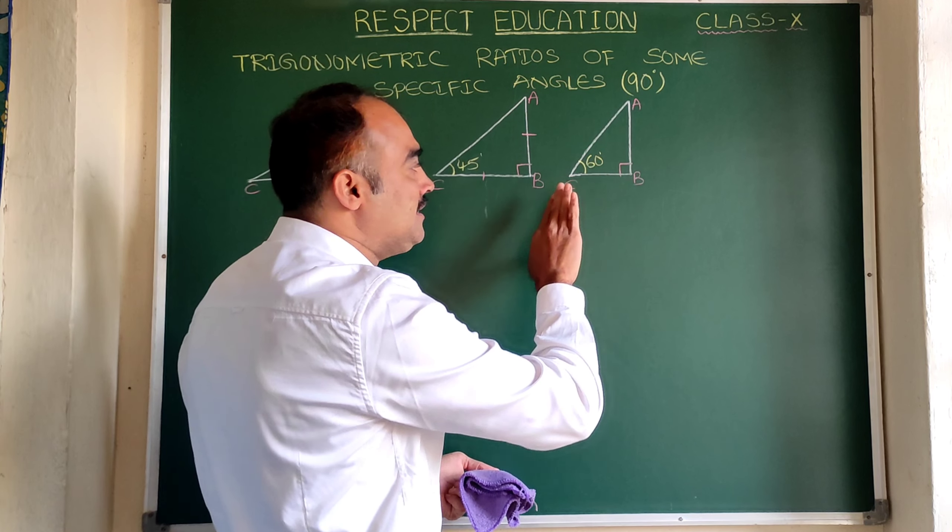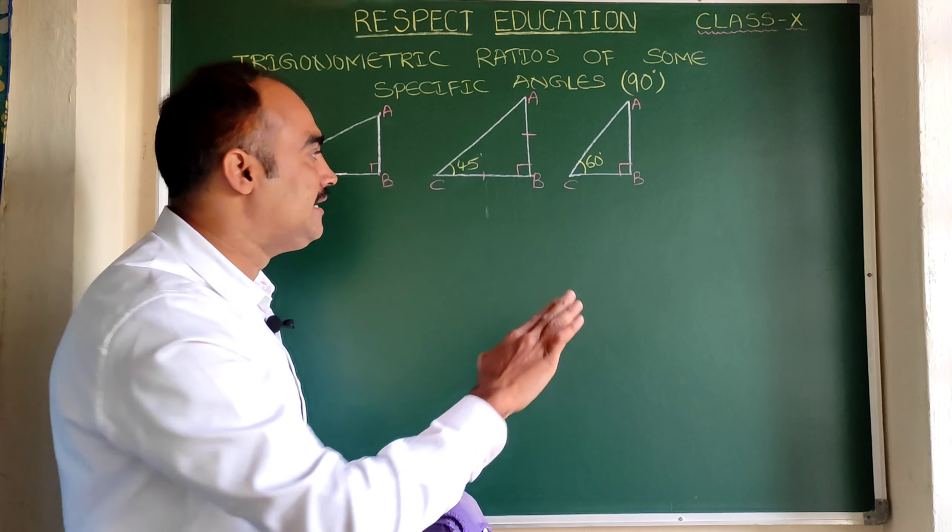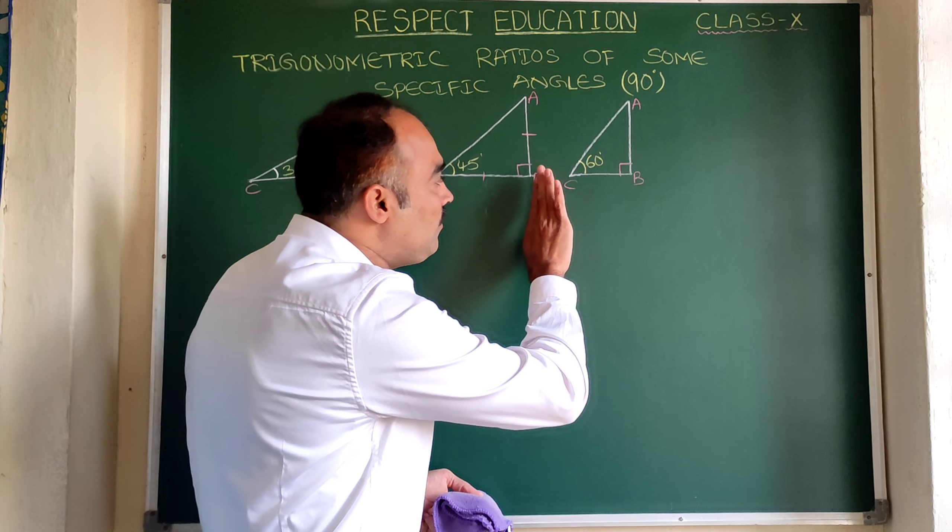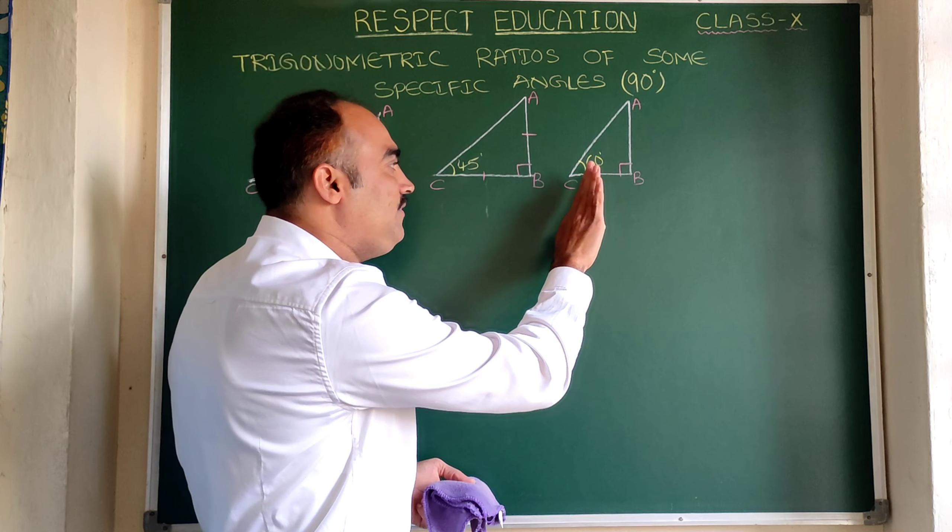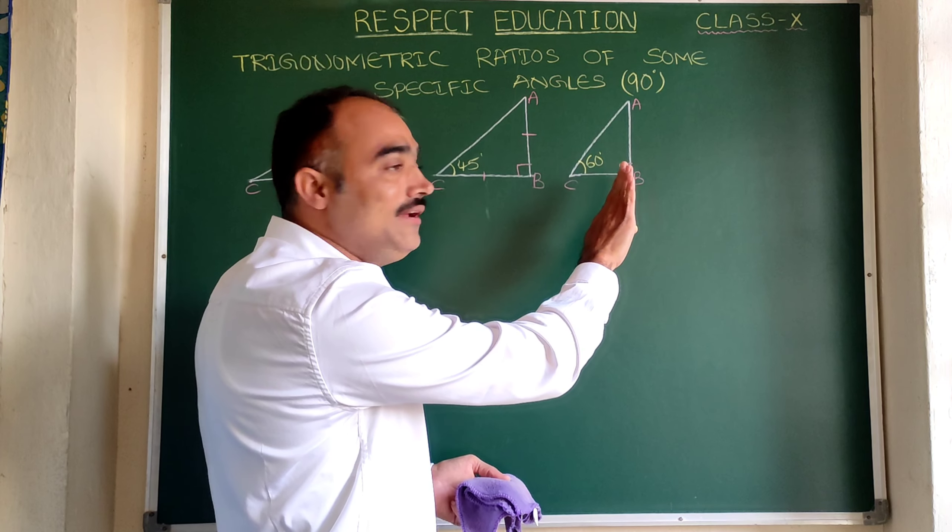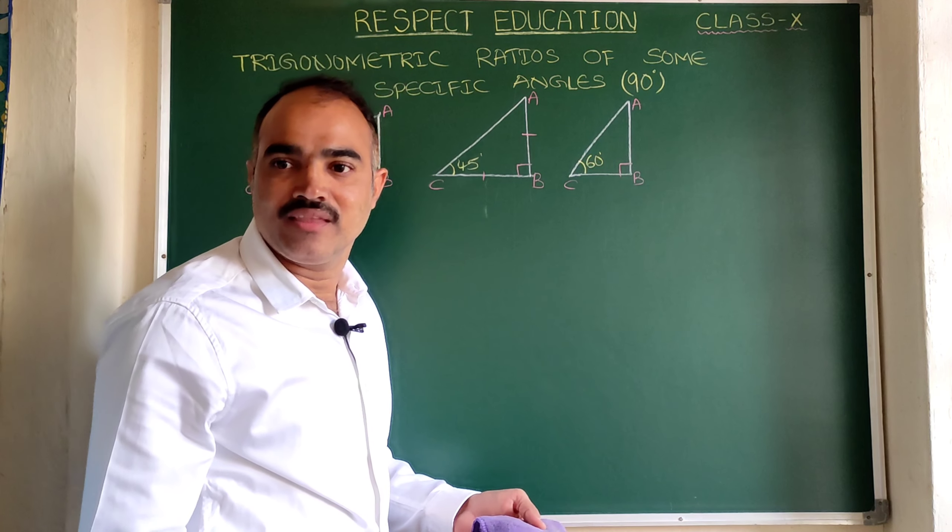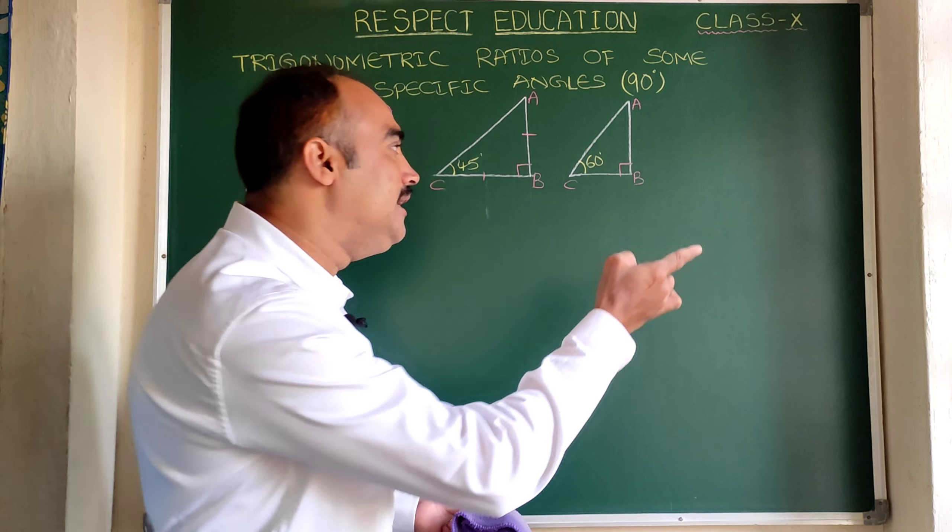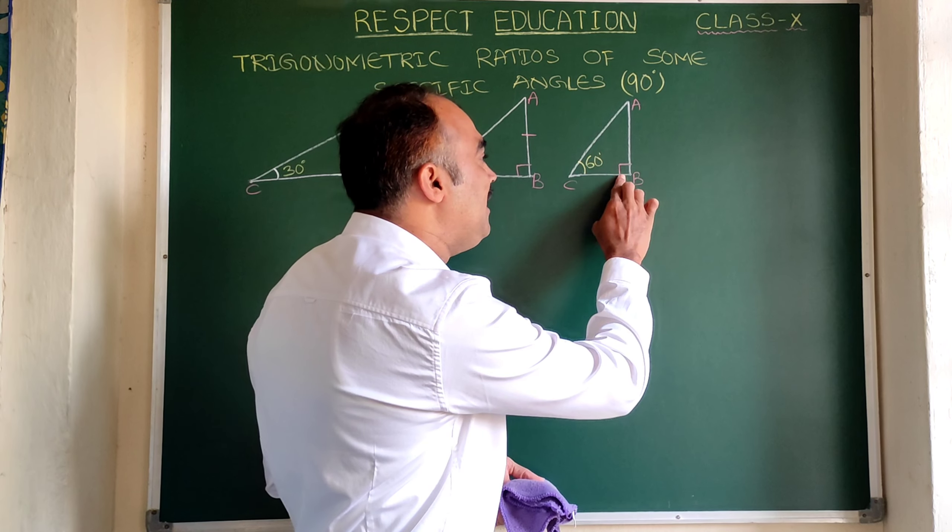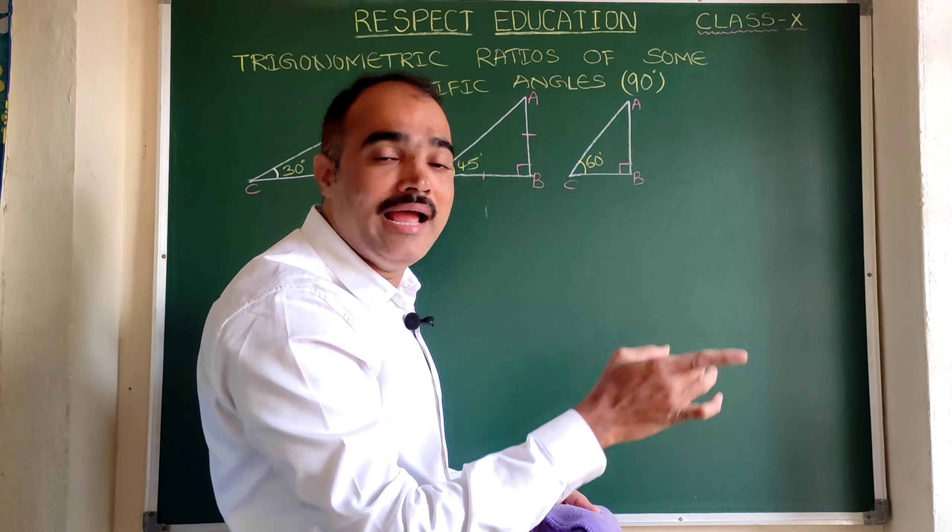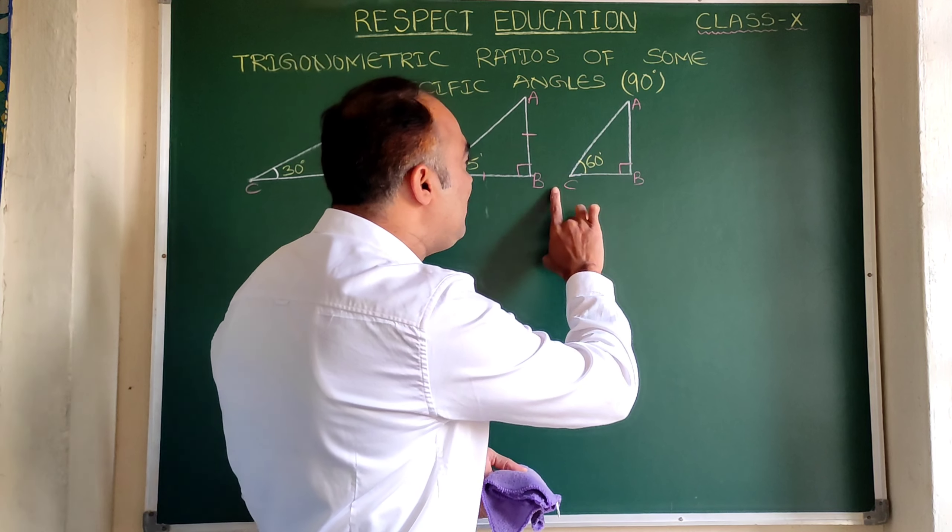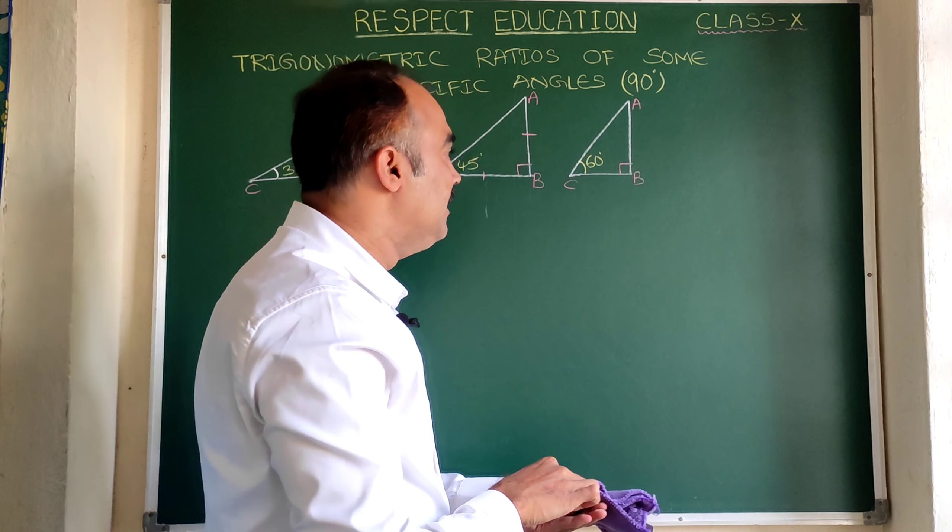So before going to 90, let us say if it is 70, will it go closer to B or not? Yes, sir. If it is 80, still closer. If it is 90, then C will coincide with B. Is it clear? Since B is 90 degrees, here we maintain angle C also 90 degrees. At that stage, C will coincide with B.